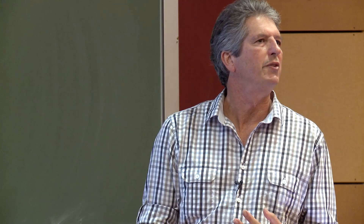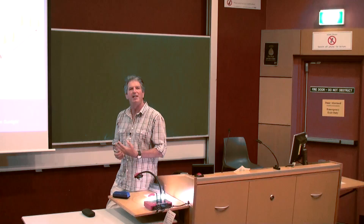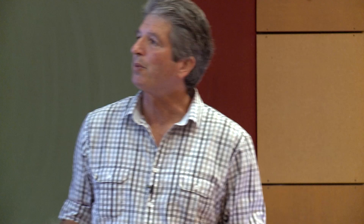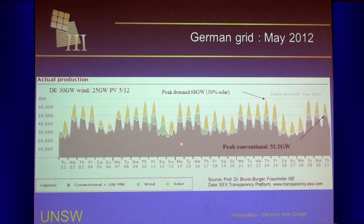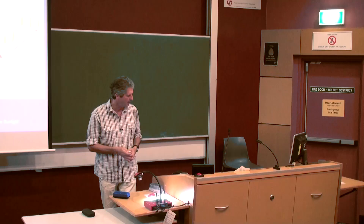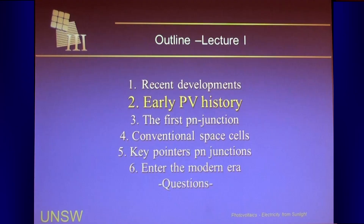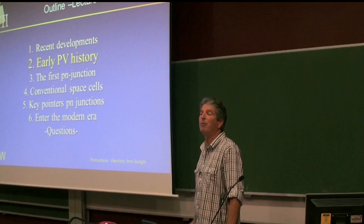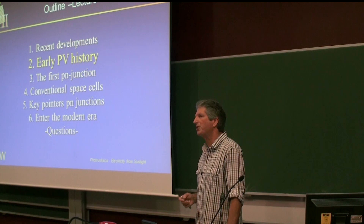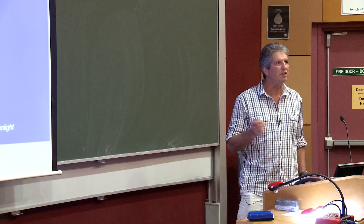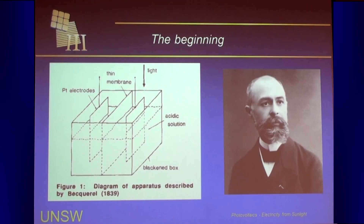Germany is fortunate to be electrically connected to many surrounding countries, so it doesn't need to provide storage for solar at present penetration levels — it can export excess or import when needed. The solar is ideally matched to demand, while wind is somewhat less well matched. Many grids around the world will be in this situation within the next five to ten years. It will initially lower the cost of electricity from conventional generators by flattening the peaks, as is already happening in Australia with residential PV systems.